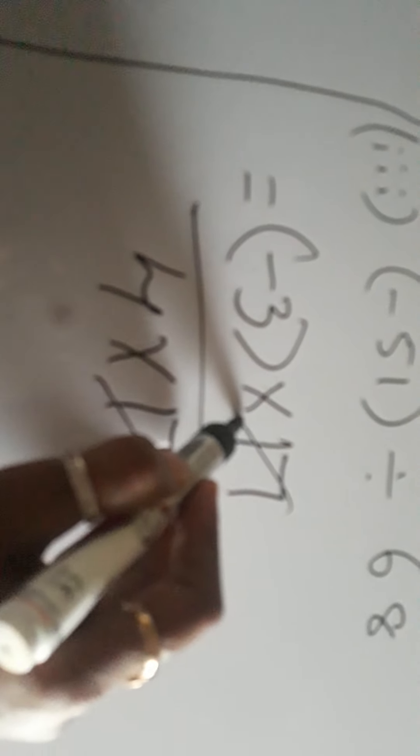Now what will happen here? 17 and 17 cancel. 17 ones are 17. What are we left with? Minus 3 upon 4.